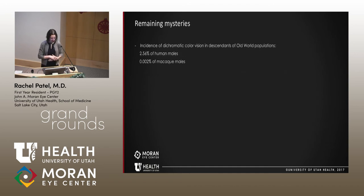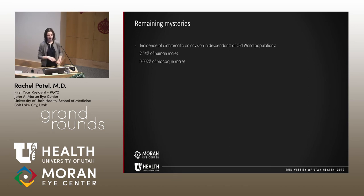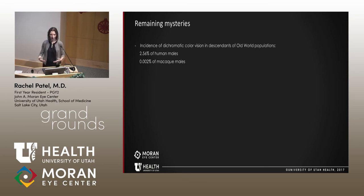One remaining mystery: even among old-world primates, humans have an unusually high rate of dichromacy in males — around 2 to 4 percent — compared to very low rates in macaque monkeys. There's been a theory that natural selection pressure to maintain trichromacy has relaxed in humans, but we don't know why or whether that is actually the case.